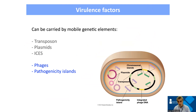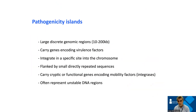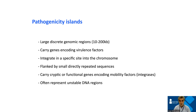Among these mobile genetic elements, we were very interested in phages — viruses that infect bacteria — and pathogenicity islands. Pathogenicity islands were discovered when people started sequencing strains and realized that some strains have a specific region in the bacterial chromosome, sometimes pretty small like 10 kb, sometimes pretty big like 200 kb. This region usually encodes virulence factors, and some strains may have it while others don't.